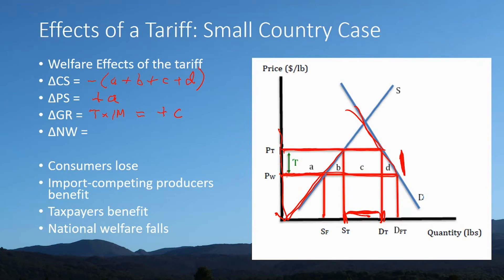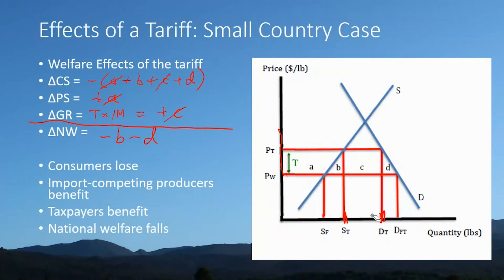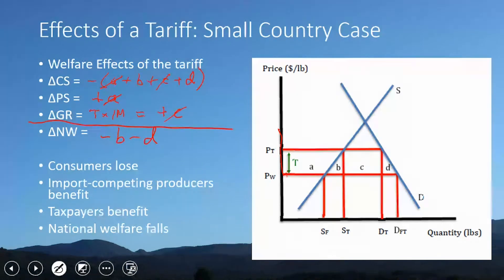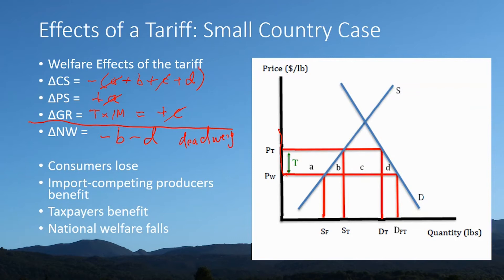Producers are better off, the government is better off, but consumers lose. What's the net effect? The A's cancel — minus A and plus A. Carrying the minus sign into the parentheses, minus C and plus C cancel as well. We're left with minus B minus D — two small triangular areas. We call B the production efficiency loss because it sits next to the supply curve, and D the consumption efficiency loss because it sits next to the demand curve. These are also known as deadweight losses.